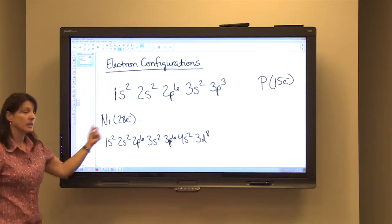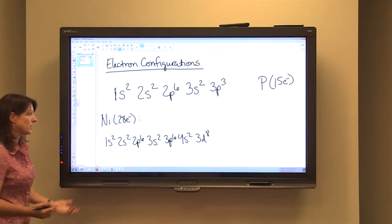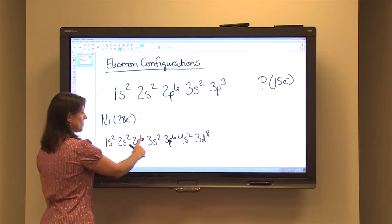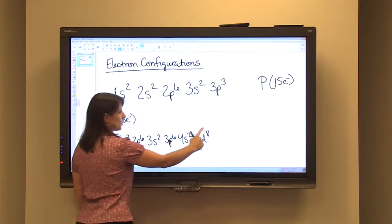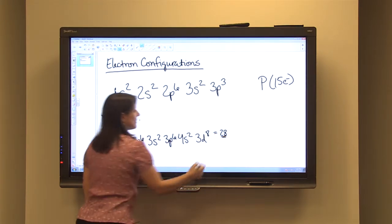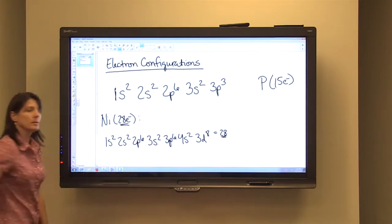And to double-check yourself again, add up your superscripts and make sure that it equals your atomic number. So 2, 4, 10, 12, 18, 20, 28. So if we add it up, it equals 28. That is the same as our atomic number. So we are good.